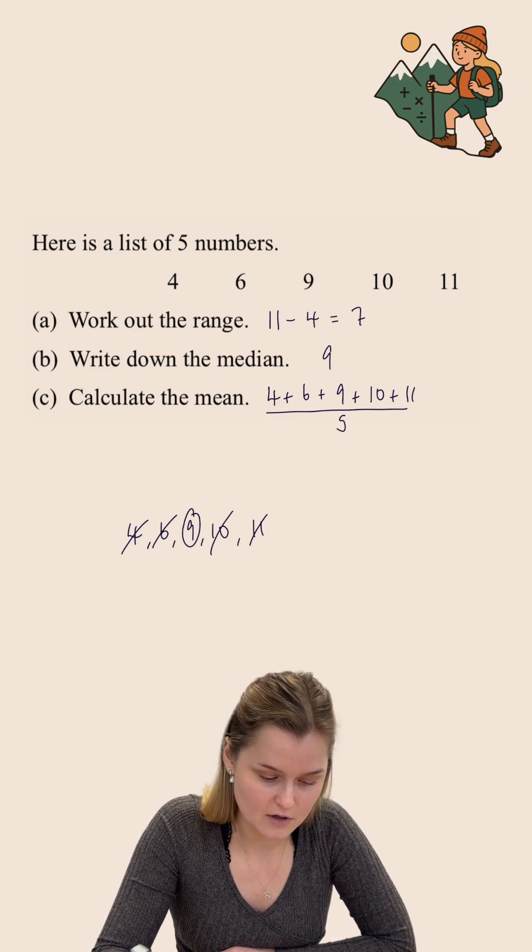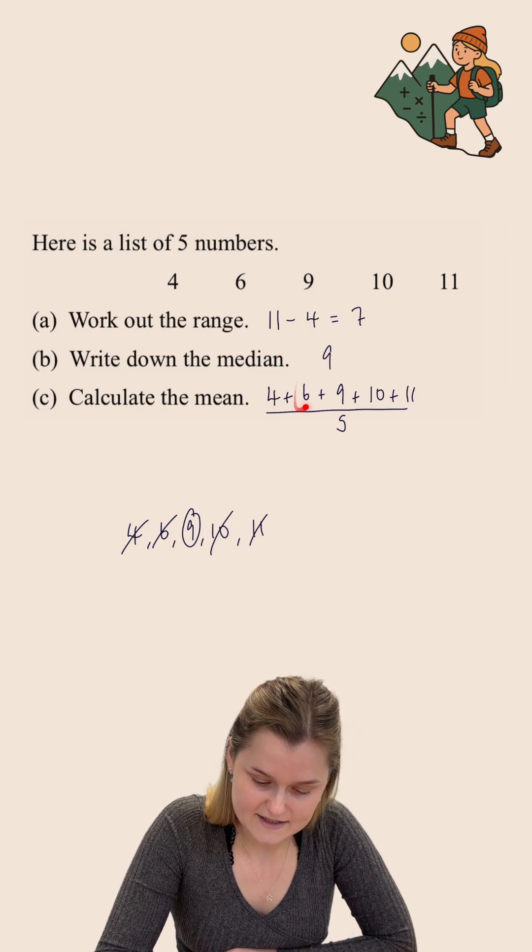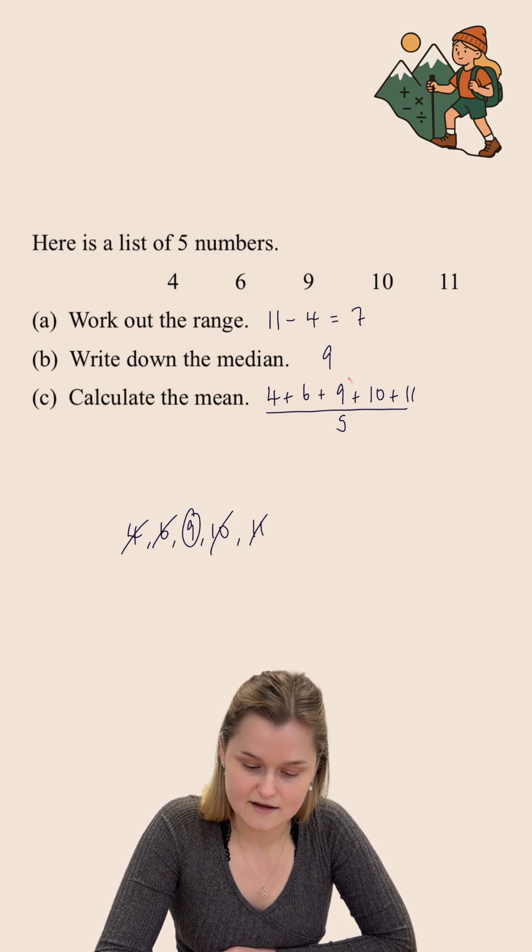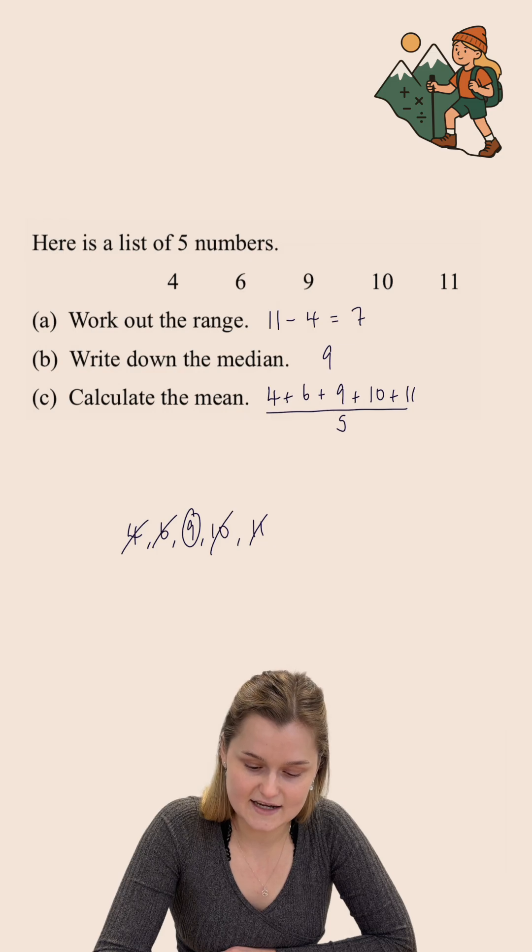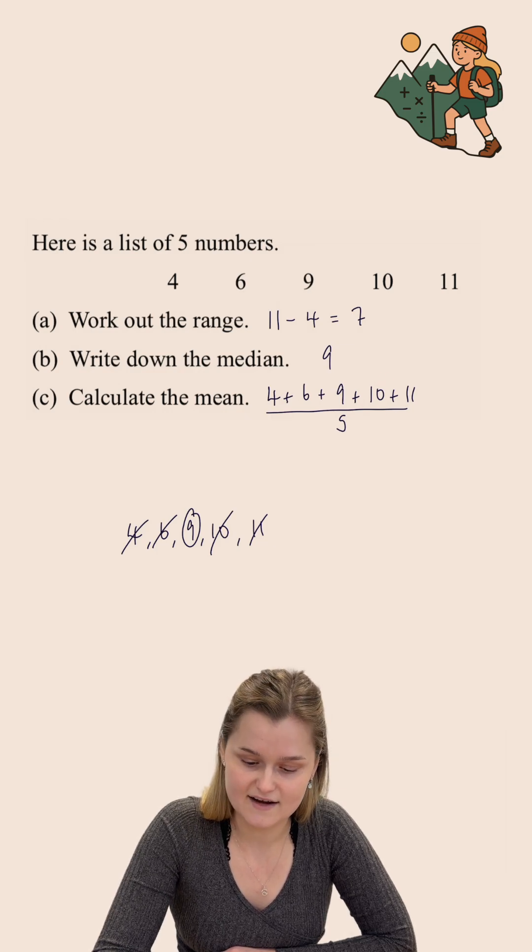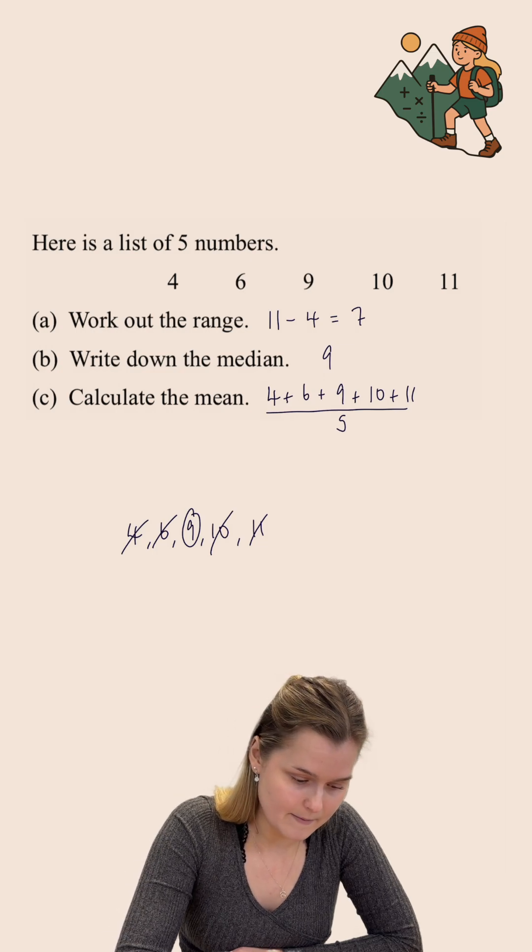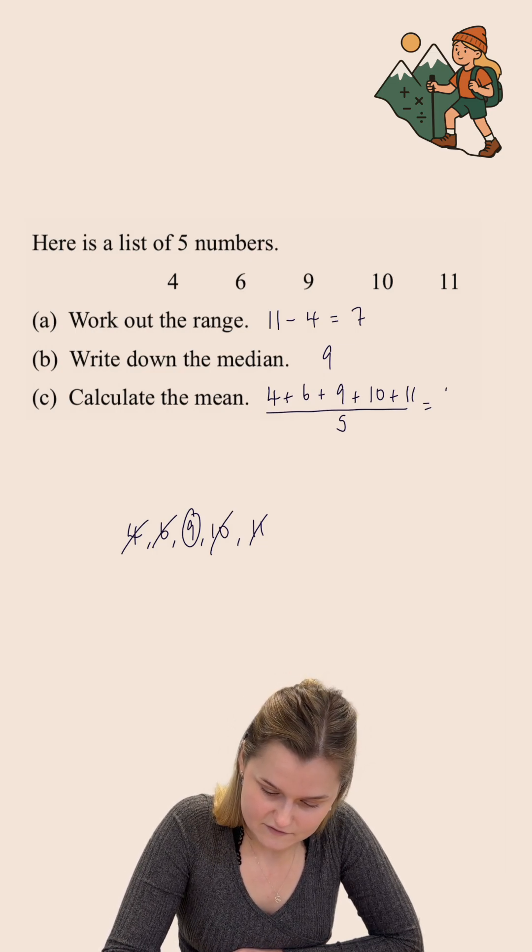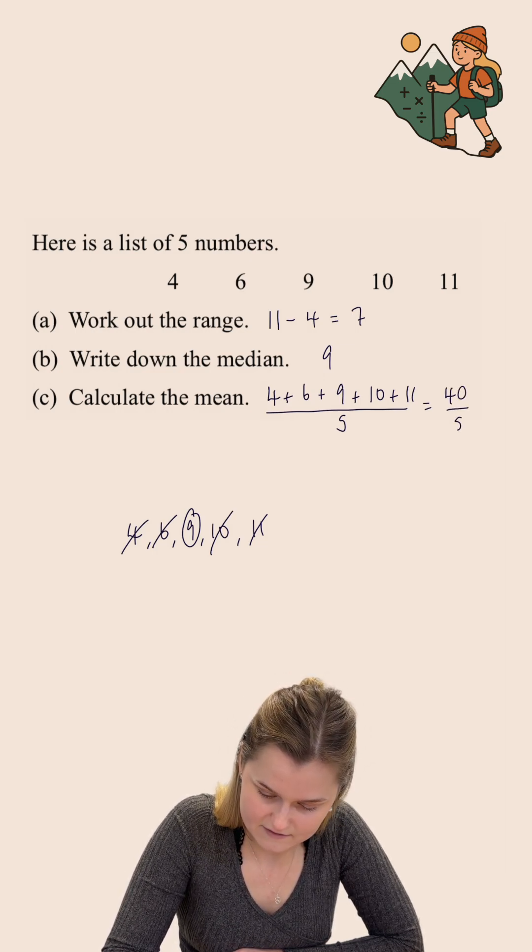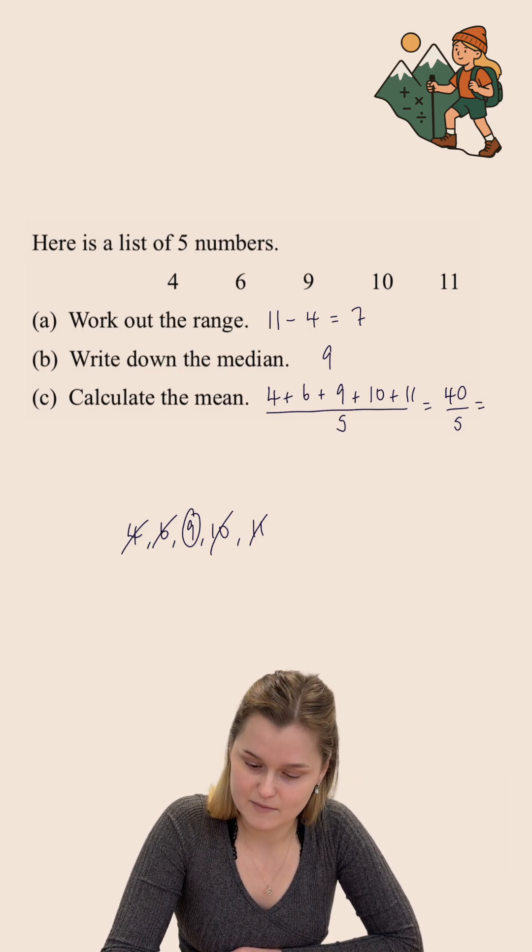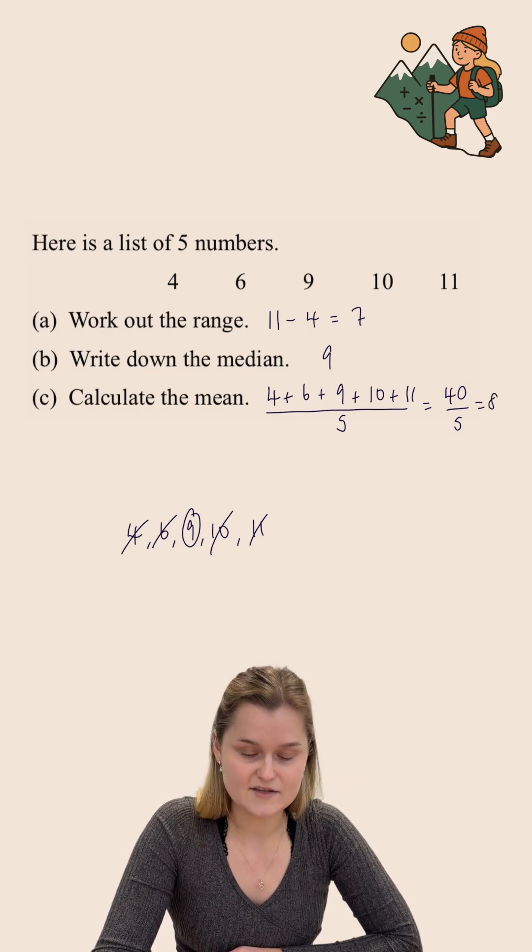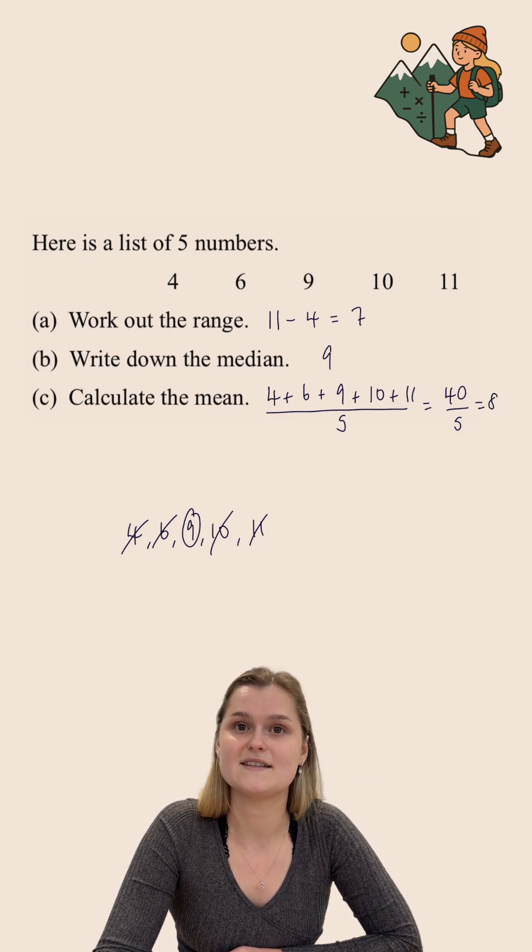Now adding these up, first of all we've got 4 add 6, which is 10, add another 9 to that which is 19, add 10 is 29, and add 11 is 40, and then I need to divide that by 5. So I need to do 40 divided by 5. 40 divided by 5 gives us 8, and so the mean of this set of numbers is 8.